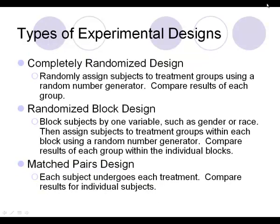Types of experiments. In the completely randomized design, we randomly assign subjects to treatment groups using a random number generator and compare results at the end. In the randomized block design, we first block subjects by a variable such as gender or race, keep those groups separate, then randomly assign within each block and compare results. In the matched pairs design, each subject undergoes each treatment, and we compare individuals with themselves across treatments.